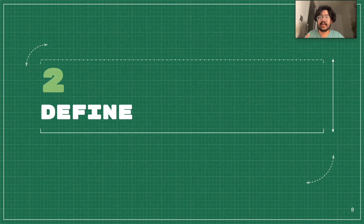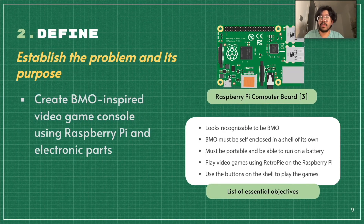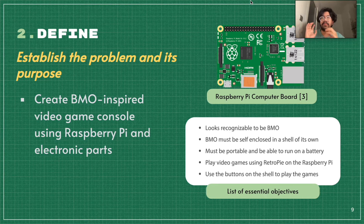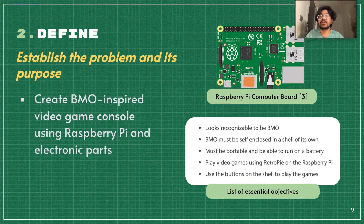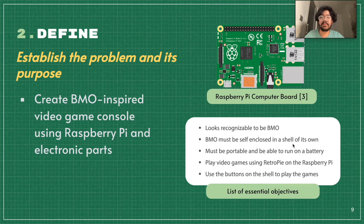That goes to our second stage, which is define. Now that we know what we want to solve, we need to define the problem. With all the information gathered, take all those important points and create specific objectives for fulfilling its purpose. In this case, we wanted to create a video game console inspired by the BMO character using a Raspberry Pi and other electronic parts. At this stage, you define the objectives: make sure it's recognizable to look like BMO, that it's enclosed in its own shell, portable, runs on battery, plays video games on Raspberry Pi using RetroPie, and uses buttons on the shell to actually play the video games.